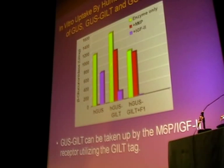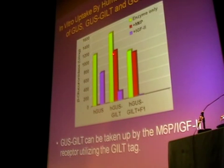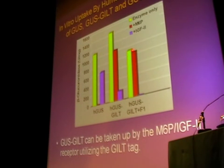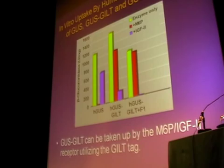H-GUS-GILT is taken up a little better than the wild-type enzyme, but that uptake is not inhibited by mannose-6-phosphate very much at all, but it's more completely inhibited by IGF-2. However, in the H-GUS-GILT plus F1 form, which only has the GILT tag, it's taken up almost as well as the wild-type enzyme, but now it's not inhibited by mannose-6-phosphate at all, but it's completely inhibited by IGF-2. So GUS-GILT can be taken up by the mannose-6-phosphate/IGF-2 receptor utilizing the GILT tag.